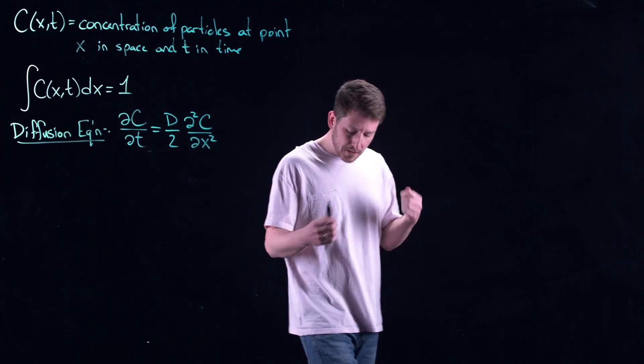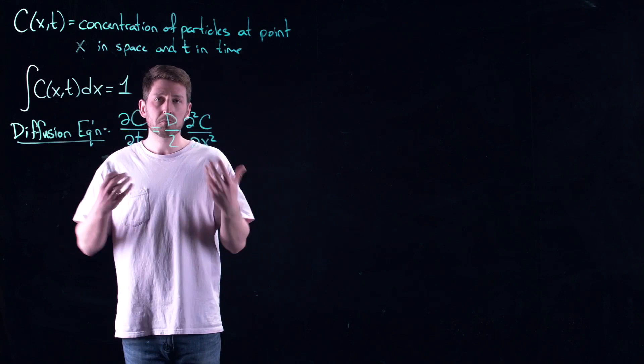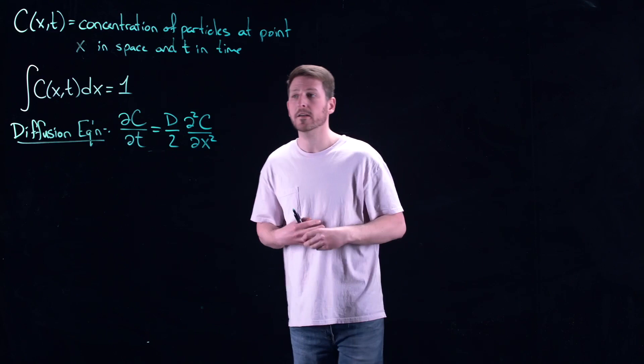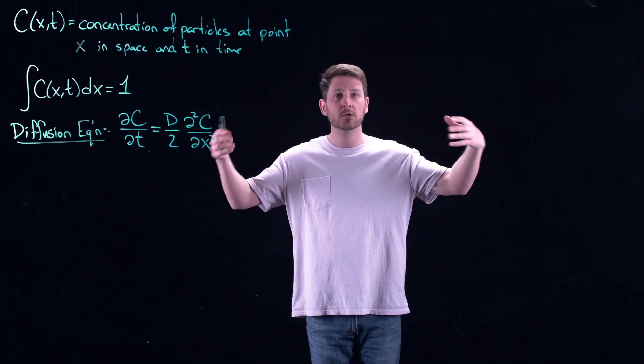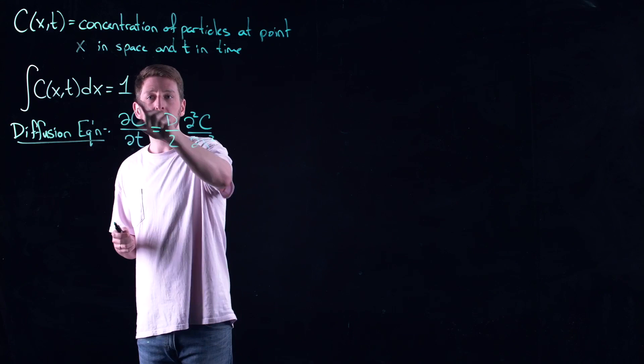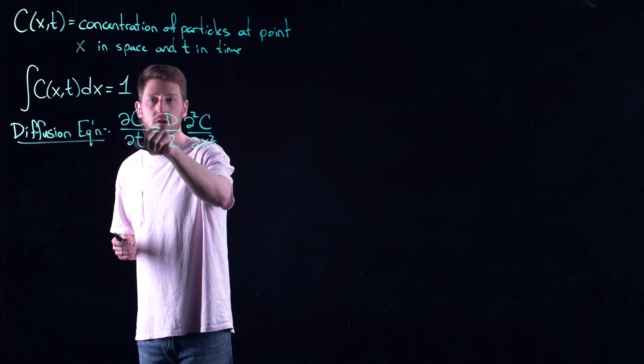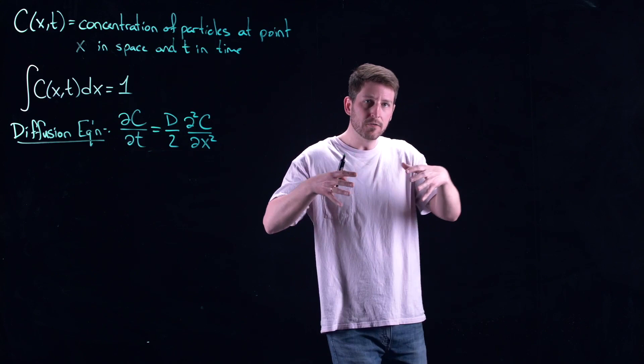Mathematically, once you get better with partial differential equations, you'll recognize this as a type of equation typically referred to as the heat equation, because it describes exactly how heat spreads throughout a room. The concentration changes in time — just like our dynamical systems — and the way it changes is given by the second derivative, which is the diffusion term telling us things are spreading out.